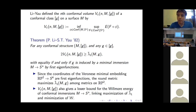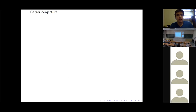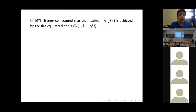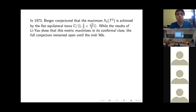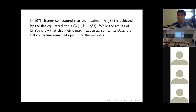By the 1980s, the normalized first eigenvalue maximum had been computed for S² and RP², each having only one conformal class. Moving to higher genus: in 1973 Berger, reading Hersch's work, got interested in maximizing the first eigenvalue on the torus. Playing with flat metrics, he conjectured the maximum should be achieved by the flat equilateral torus — C modded out by the lattice generated by 1 and ½ + i√3/2. While Li-Yau's results show this metric maximizes within its conformal class via a minimal immersion into S⁵, it wasn't clear it maximizes among all metrics.